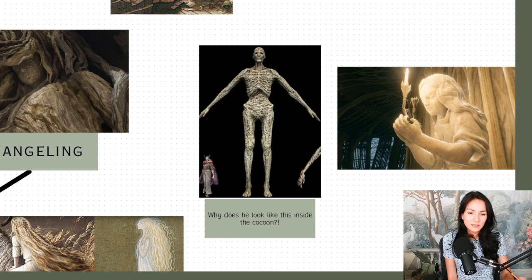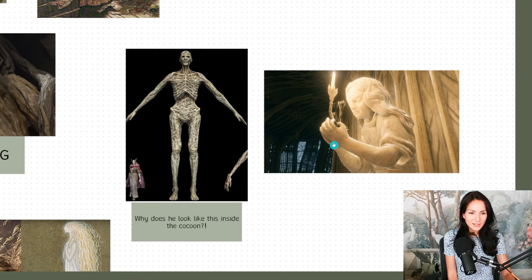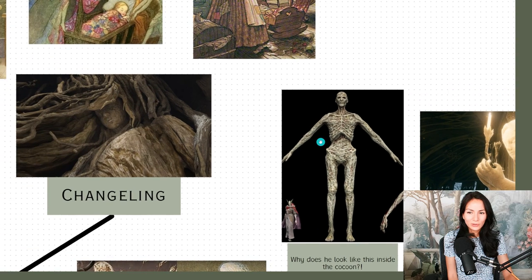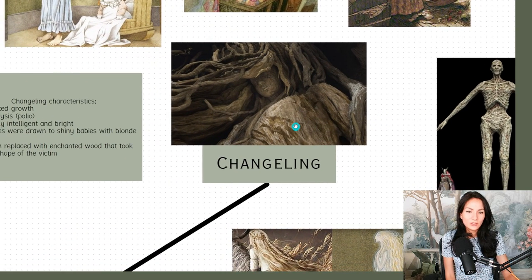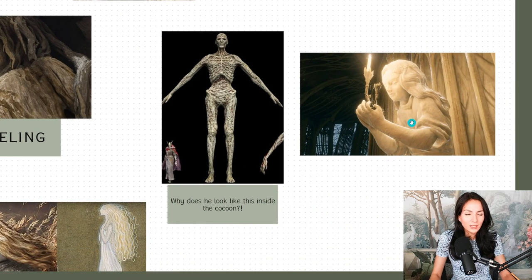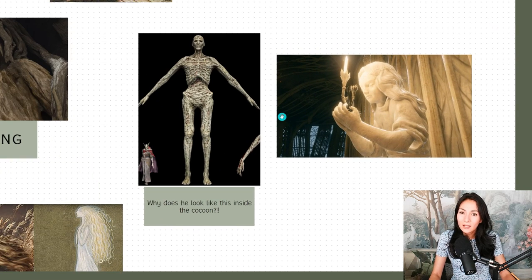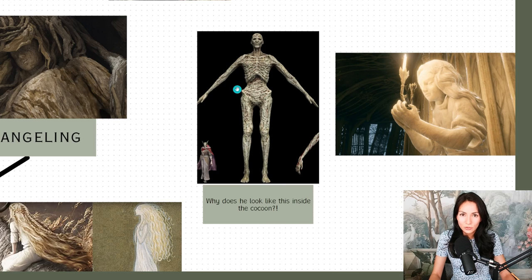The changeling would have characteristics like they wouldn't grow correctly, but they'd also be very bright and very intelligent and very wise beyond their years, which is a perfect description for Miquella. So back to the character model of Miquella inside the cocoon. Why does he look like this?